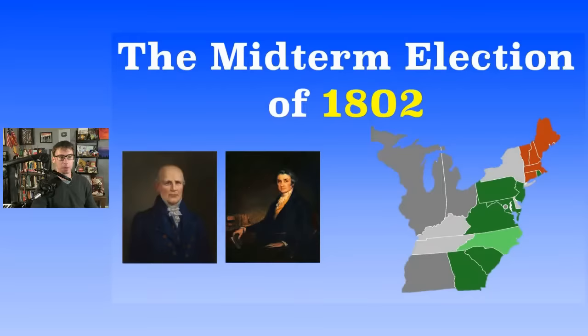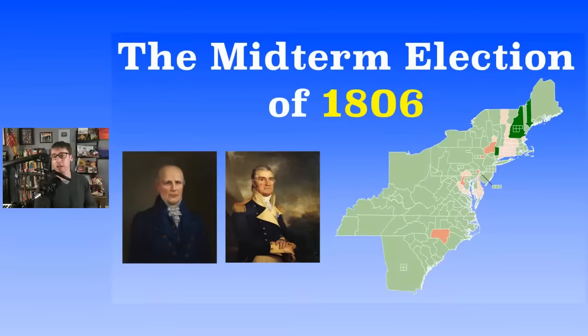For many years now, just get used to Democratic-Republicans running things — they're very popular and doing pretty well. In 1806, the president pro tempore was Samuel Smith, and Nathaniel Macon remains the Speaker of the House.